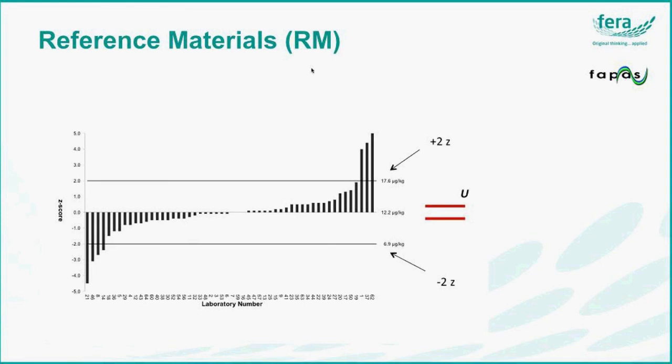A reference material is different. In the case of a reference material, we're using some of the proficiency test data, but providing a measurement uncertainty value with it. This is not the performance limits of a proficiency test, but it's the variance around the reference value that indicates its accuracy. So it has purposes beyond that of a QC, for example, calibration of a method.